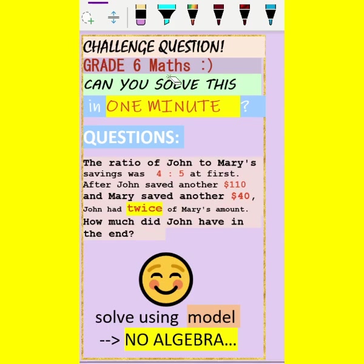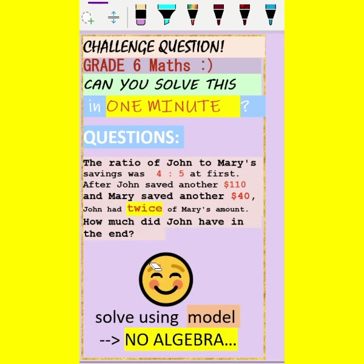This is a challenge question — grade 6 mathematics, ratio. Can you solve this in 1 minute? The ratio of John to Mary's savings was 4 to 5 at first. After John saved another $110 and Mary saved another $40, John had twice of Mary's amount. How much did John have in the end? You have 1 minute to solve this.